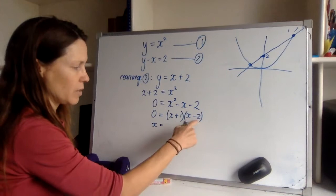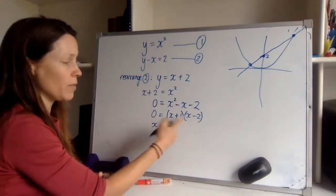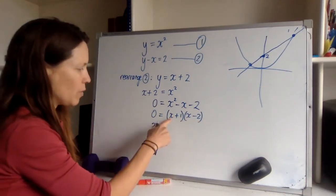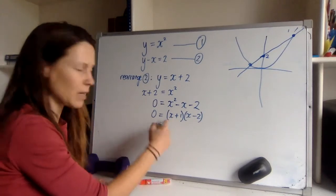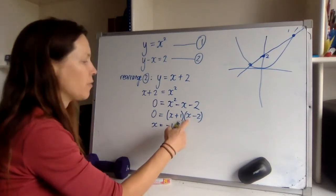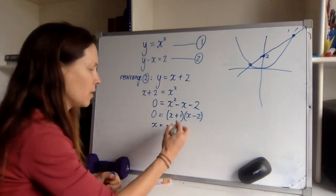Well, if this part times this part equals zero, one of them must have been zero. For this part to be zero, x would have to be negative one. And for this part to be zero, x would have to be two.